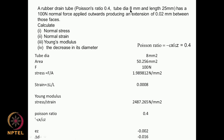The tube diameter is 8 mm, so the change in tube diameter is 0.002 × 8 = 0.016 mm. So the diameter of the tube gets reduced by 0.016 mm. When the tube gets elongated by 0.02 mm, the diameter gets reduced by 0.016 mm.